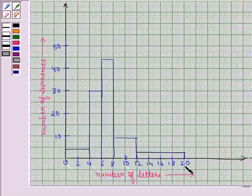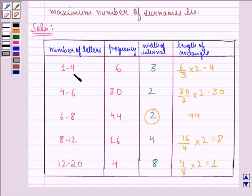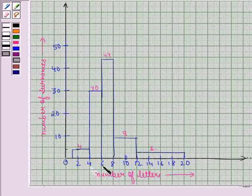This will be the required histogram where we see that 1 to 4 we have 4, 4 to 6 is 30, 6 to 8 is 44, 8 to 12 is 8 and 12 to 20 is 1. So this will be our answer to the question.